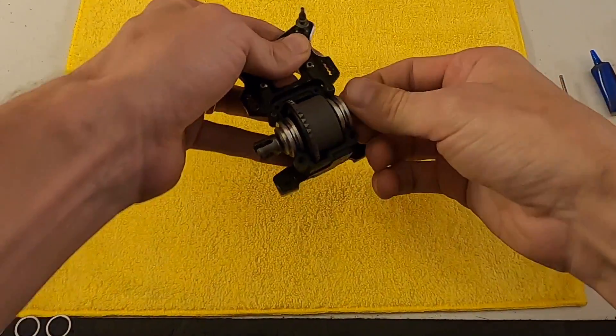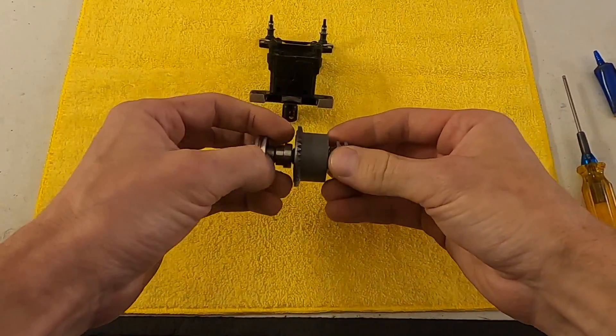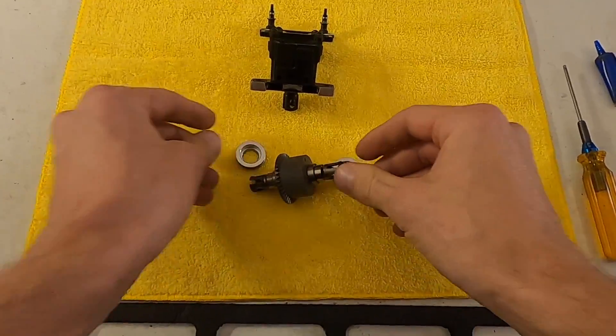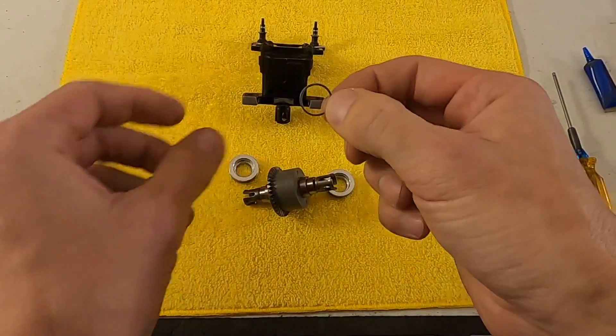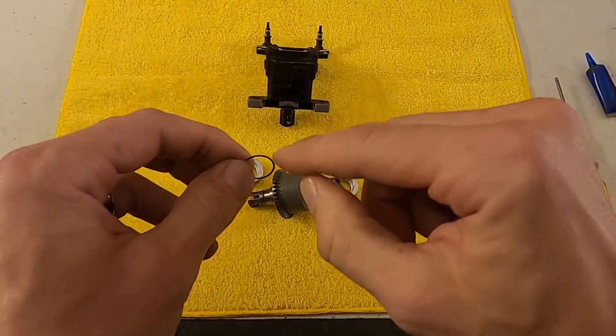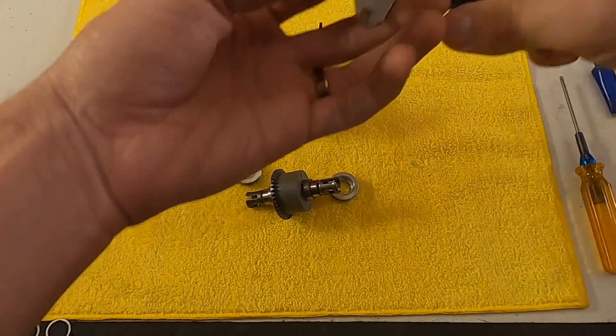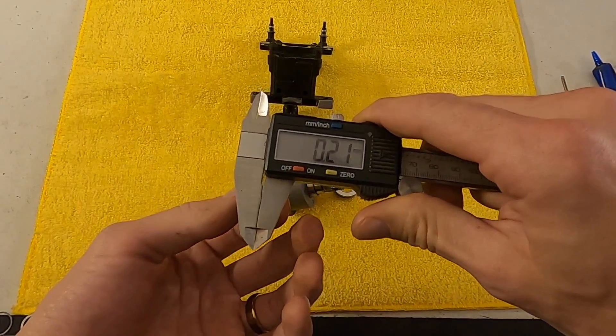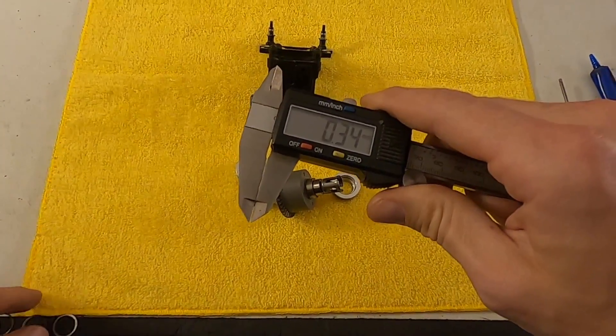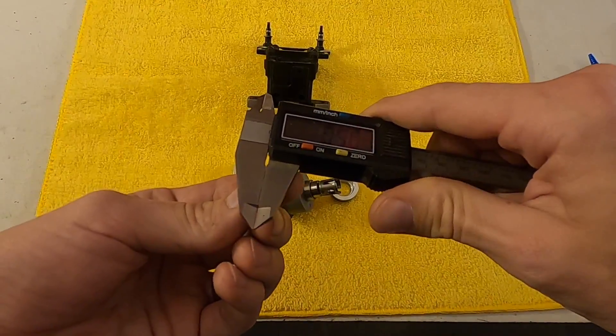All the cars that I know of for eighth scale generally use the same shims. These are 14 by 16 shims, and they come generally in two-tenths of a mil or one-tenth of a millimeter. So it's good to have a variety of those. You can see this one is a two-tenth shim, and then I have some one-tenth shims.